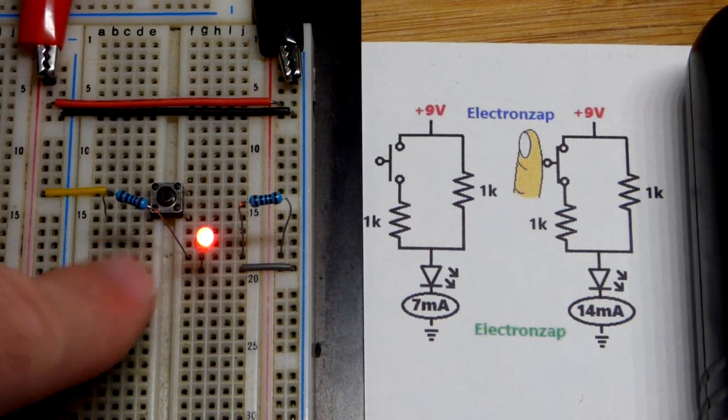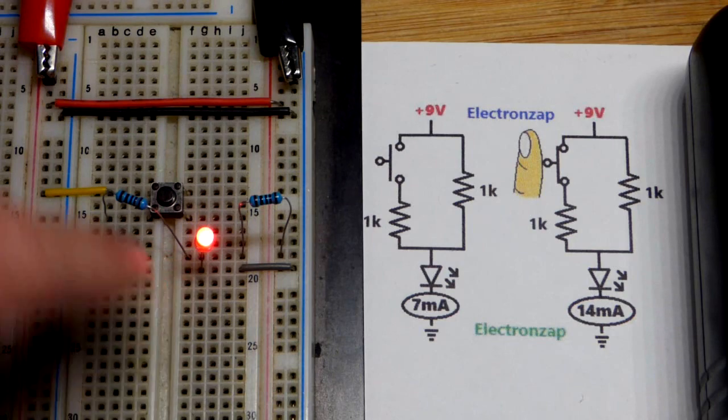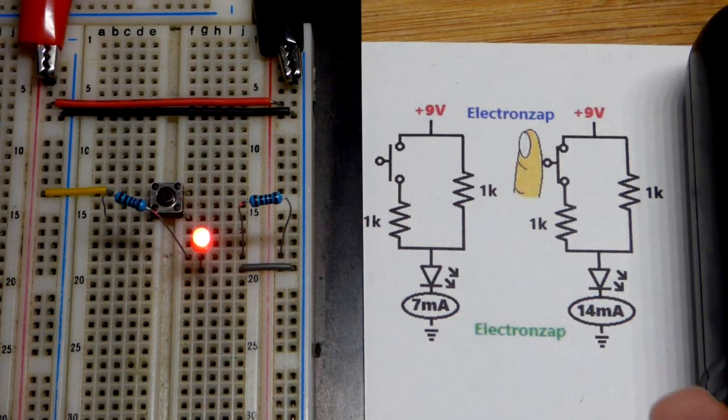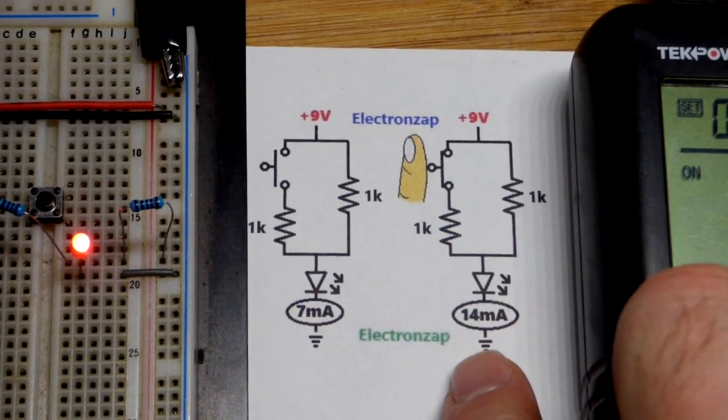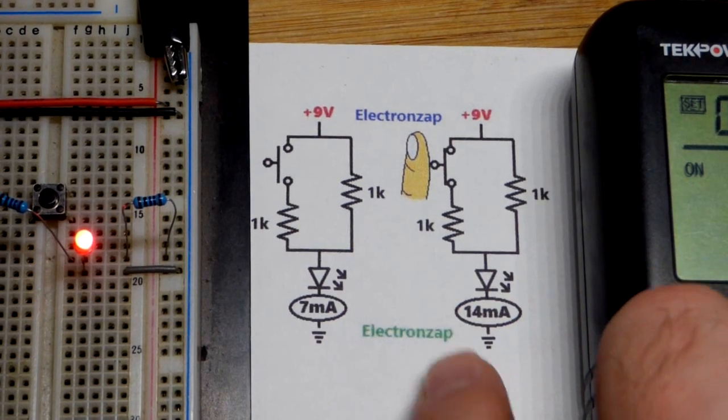It gets brighter because we got the positive supply there to the top of the switch. Now it's open so it's not connected, but down there we got another 1000 ohm resistor. The power supply said 13 milliamps of current, but it's probably closer to 14 milliamps. It's not as accurate as a multimeter.